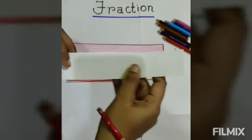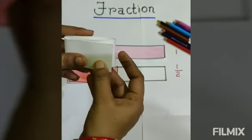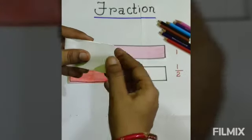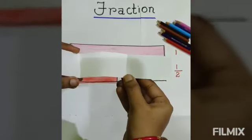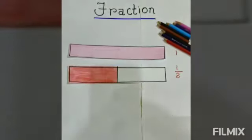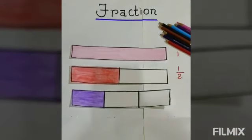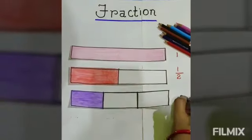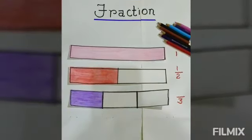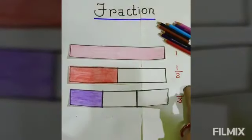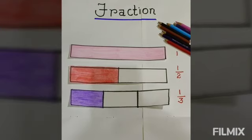Now we take another strip — this is a bit tricky. We fold this strip in such a way that we get three equal parts. Now we have got three equal parts of the strip. We color one part and write down the fraction for it. The total number of equal parts is three and the number of colored parts is one, so the fraction is one by three, or one third.